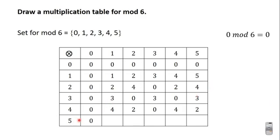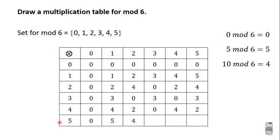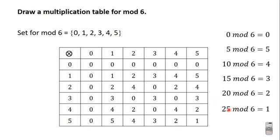Let's move on to the last row. We have 5 times 0; 5 times 0 is 0, and 0 mod 6 is 0. 5 times 1 is 5; 5 mod 6 is 5. 5 times 2 is 10; 10 mod 6 is 4. 5 times 3 is 15; 15 mod 6 is 3. 5 times 4 is 20; 20 mod 6 is 2. And finally, 5 times 5 is 25; 25 mod 6 is 1 because 25 divided by 6 gives us 4 remainder 1.